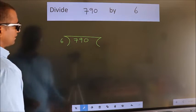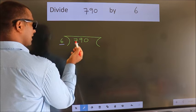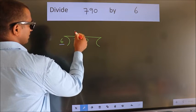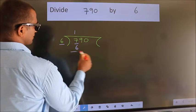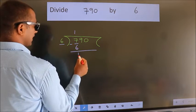Next. Here we have 7, here 6. A number close to 7 in the 6 table is 6 ones, 6. Now we should subtract. We get 1.